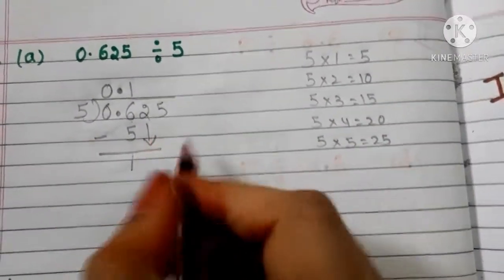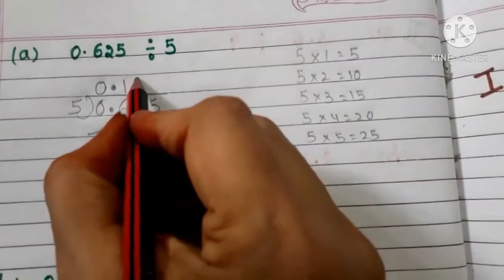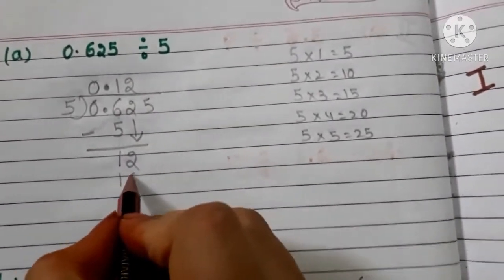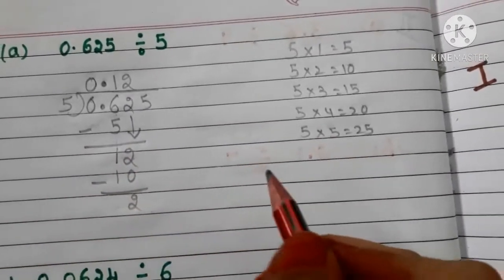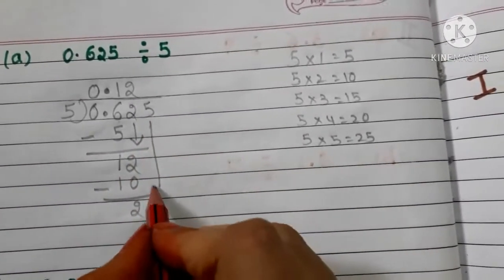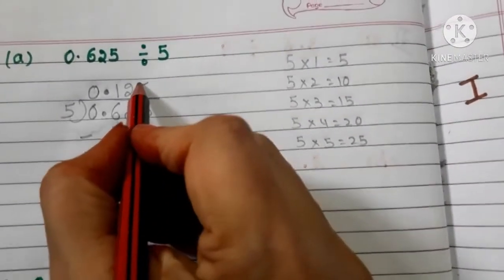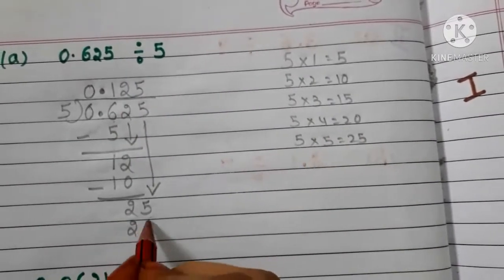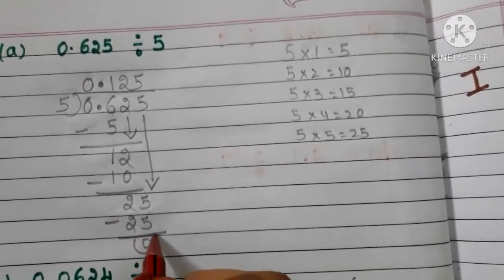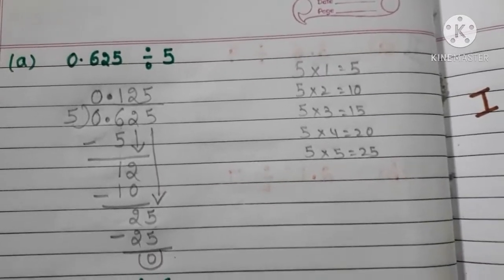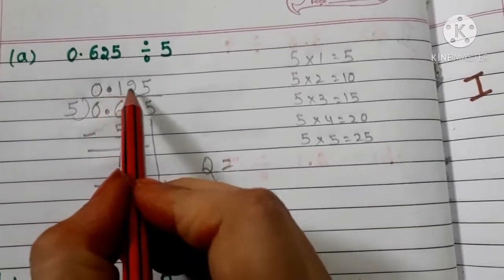Now bring down 2, giving us 12. Five 2s are 10, so write 2 in the quotient and 10 below. 12 minus 10 is 2. Now bring down 5, giving us 25. Five 5s are 25, so write 5 in the quotient and 25 below. 25 minus 25 is 0. The quotient is 0.125.